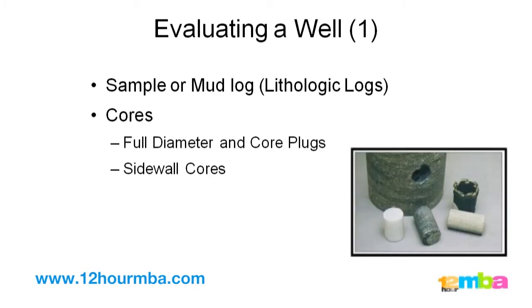Cores. Sometimes when we know that we are going to drill through a promising hydrocarbon formation, we want to core the formation before we drill through it. Coring is a special operation — we go with a coring bit and a core barrel behind it. The coring bit is hollow, 6 inches in diameter, and we drill through the formation bringing a 6-inch diameter rock sample to the surface. That rock sample could be 30, 60, or 90 feet long.